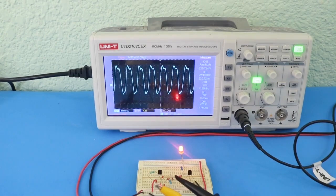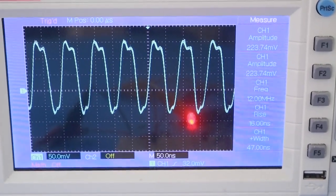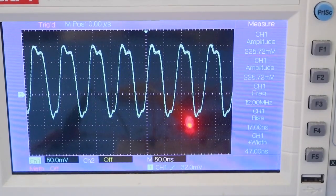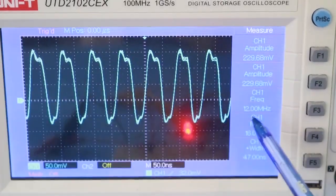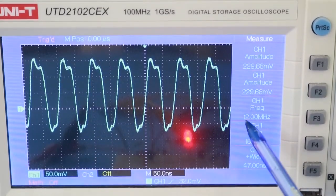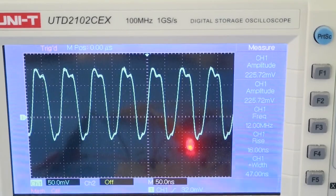So there you can see the output, which is almost a sine wave. And I don't know if you can see in the screen, but here we can see that the oscilloscope says that it is 12.00 MHz.